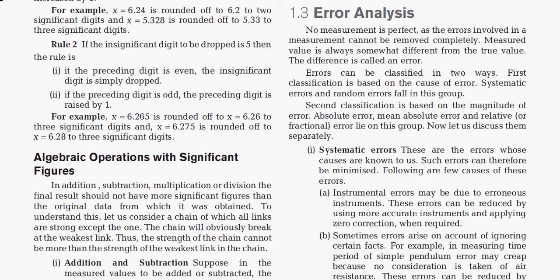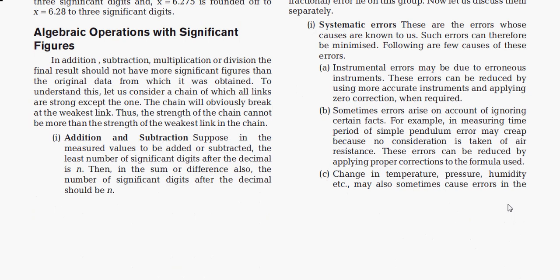Let's discuss errors one by one. First is systematic error — these are errors whose causes are known to us and can be minimized. Instrumental error may be due to erroneous instruments; these can be reduced by using more accurate instruments and applying zero correction when required. Sometimes error arises by ignoring certain facts — for example, when measuring the time period of a simple pendulum, not accounting for air resistance introduces error. Changes in temperature, pressure, or humidity may also cause error.